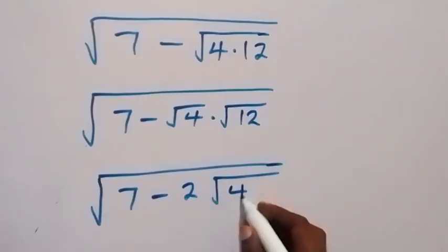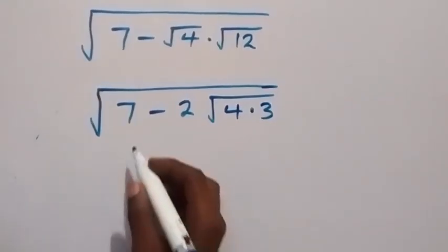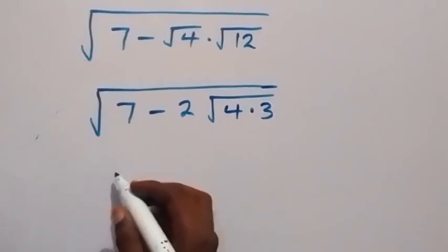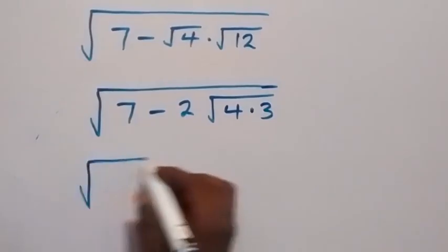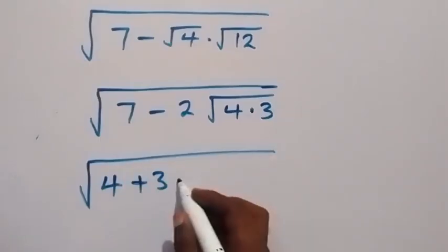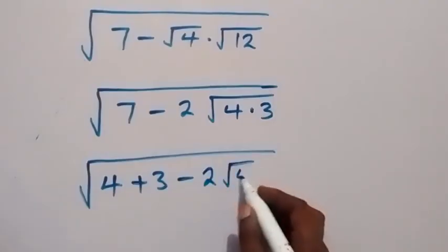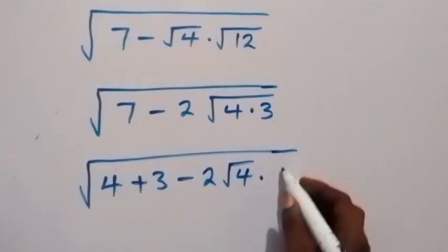And in the next step, we can write this 7 as 4 plus 3. So we have root of 4 plus 3, then minus 2, then root 4 times root 3.